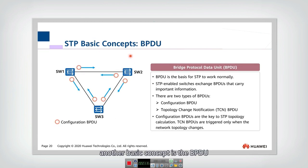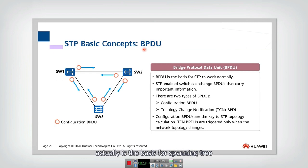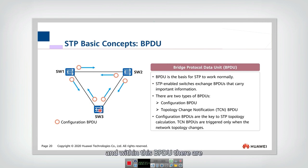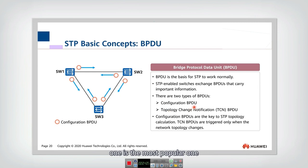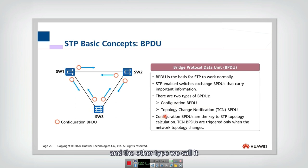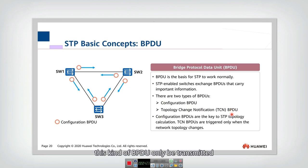Another basic concept is the BPDU, which stands for Bridge Protocol Data Unit. The BPDU is the basis for the spanning tree protocol to work normally. It is a small message exchanged between switches, and contains several important pieces of information. There are two types of BPDU: the most common one is the configuration BPDU, which is used by switches to construct the topology. The other type is the Topology Change Notification BPDU, which is only transmitted when the network topology changes.